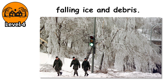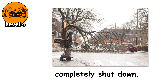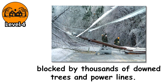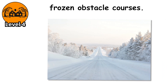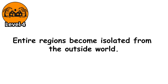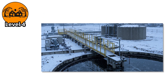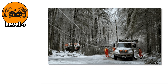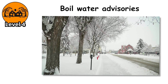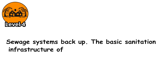People have been killed by falling ice and debris. Homes are crushed. Cars are totaled under collapsed structures. Transportation networks completely shut down. Roads are impassable not just because they're icy, but because they're blocked by thousands of downed trees and power lines. Highway systems become frozen obstacle courses. Airports close. Train services stop. Entire regions become isolated from the outside world. The cascading failures spread beyond just power. Water treatment plants, unable to operate without electricity — and with their backup generators running out of fuel because fuel trucks can't reach them — start failing. Boil water advisories go into effect, but people can't boil water without power. Sewage systems back up. The basic sanitation infrastructure of modern society breaks down.